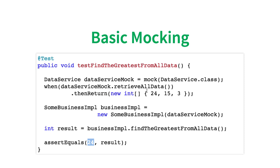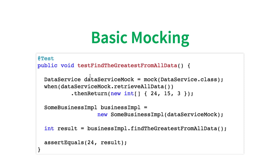So we know that if the input is 24, 15, 3, the result should be 24, and we write tests using that fact. This is what is called mocking. The code we are looking at is the code for a specific framework called Mockito. The code is very, very readable — create a mock of the data service, when you call this method then return this. It's almost like reading English, and that's one of the reasons why Mockito is one of the most famous mocking frameworks — so famous they have ports to other languages besides Java.